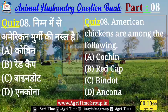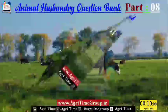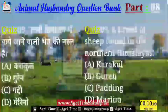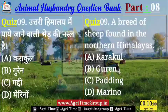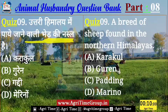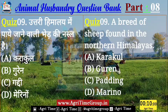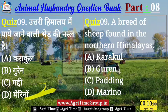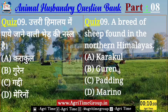Question number 9 — यह रहा आपके screen पर। उत्तरी हिमालय में पाई जाने वाली भेड़ की नस्ल इन options में से कौन सी है? Option में दे रखे हैं: Karakul, Gurez, Gaddi, और Merino। तो बतलाईए — उत्तरी हिमालय में पाई जाने वाली भेड़ की नस्ल कौन सी है?